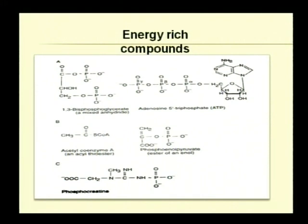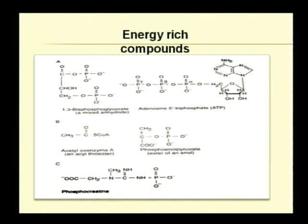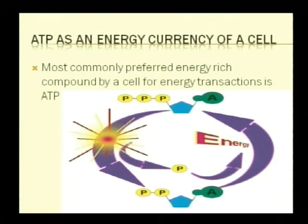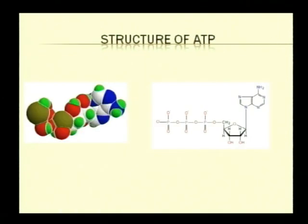Examples of energy-rich compounds include 1,3-bisphosphoglyceric acid, ATP, acyl coenzyme A derivatives like acetyl coenzyme A, and phosphoenolpyruvate — all having one or more high-energy phosphoanhydride bonds. By hydrolysis of this bond, the required amount of energy can be generated as needed. ATP is regarded as the universal source of energy for microorganisms. ATP works not only as a source of energy but also as a phosphate group donor.